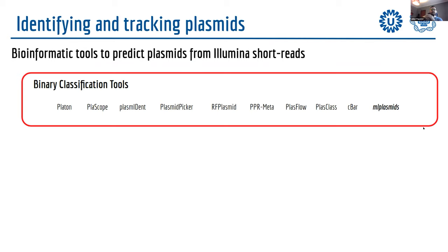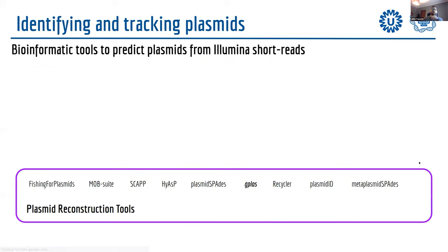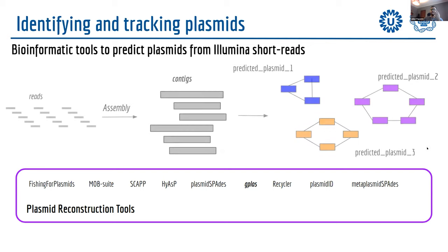There are many bioinformatic tools that help predict plasmids from short reads, and we can categorize them into two main groups. The first group is binary classification tools, which sort contigs into either plasmid-derived or chromosome-derived. The second group is plasmid reconstruction tools, which take the process further and try to assemble those contigs into individual plasmid predictions.